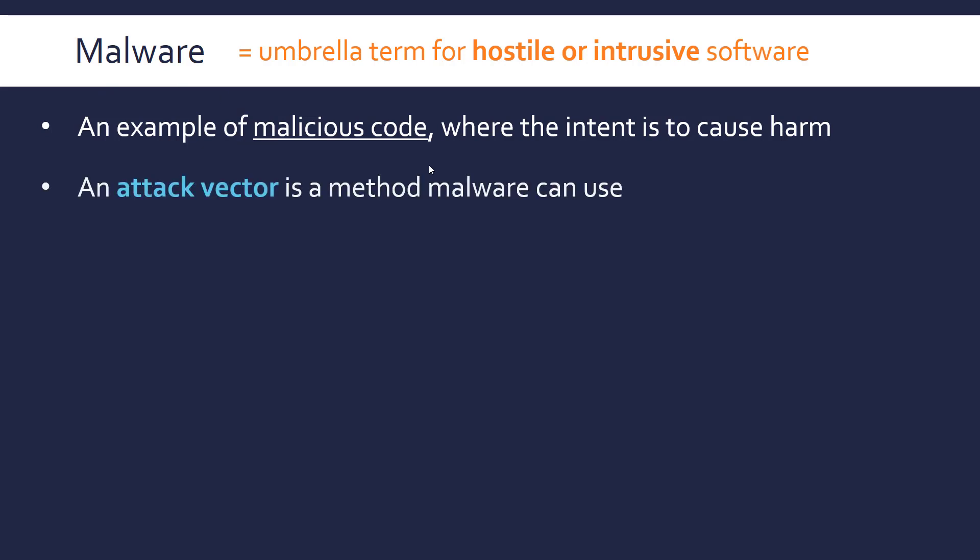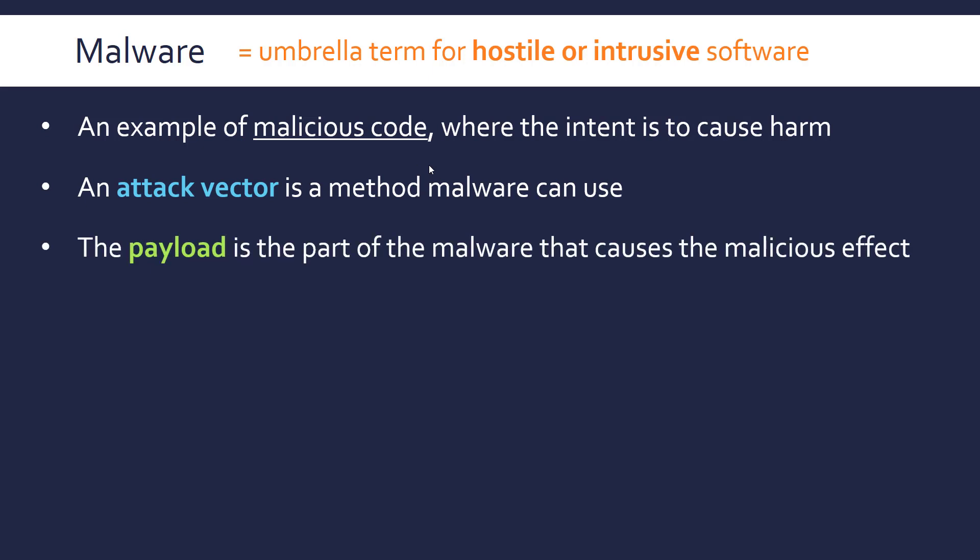Two terms which come up quite a lot in the formal analysis of malware are attack vector and payload. An attack vector, or just a vector, is the method malware is using — what it's exploiting essentially. It's how malware is gaining access to the system and how it's being spread. It's a generic term referring to the method of how malware is working.